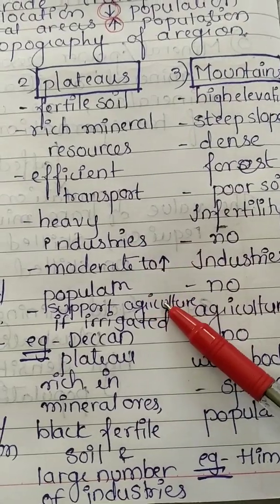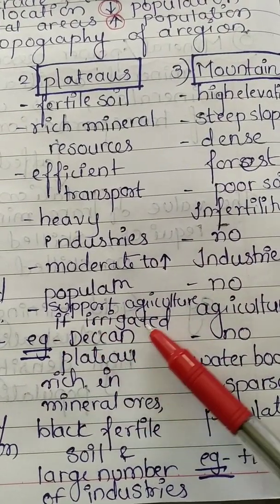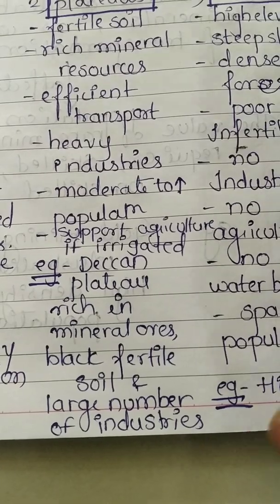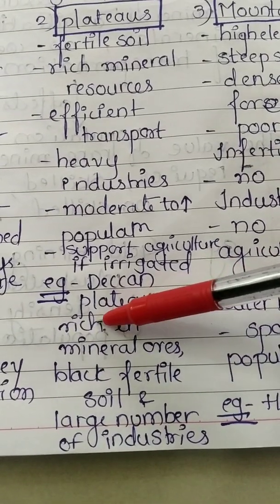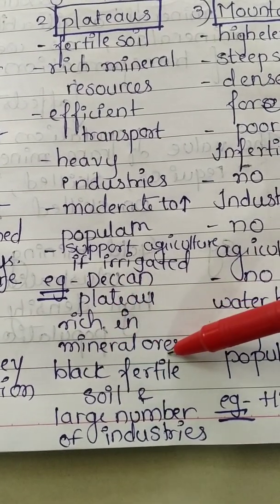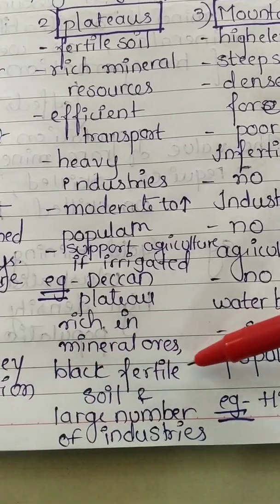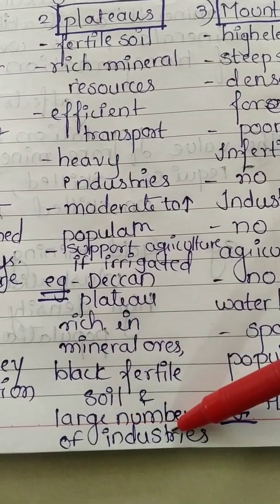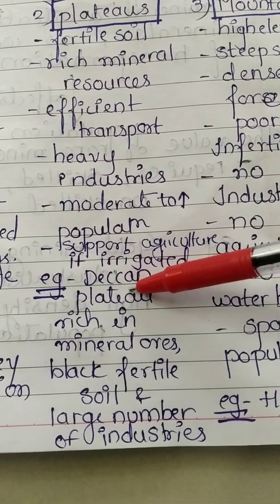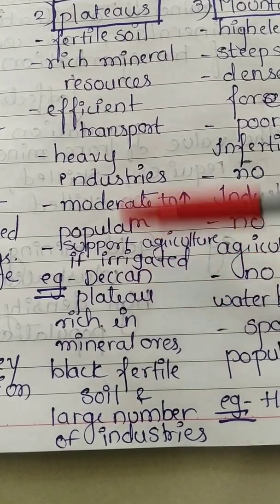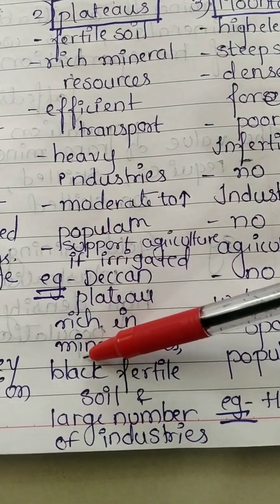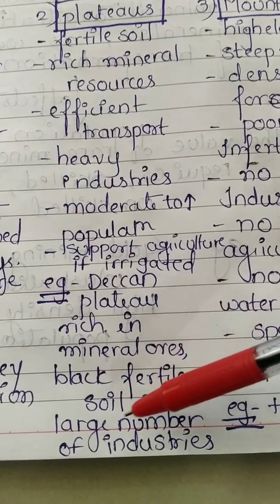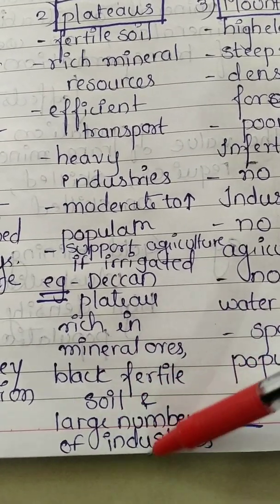An example of a plateau is the Deccan Plateau, which is rich in mineral ores, has black fertile soil, and has a large number of industries. The Deccan Plateau is a prime example of heavy industrialization supported by its mineral richness.